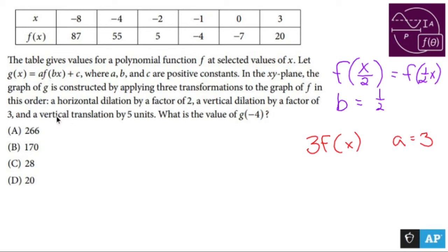Now the easiest part about all of this is the vertical translation of five units. That just means you're moving your graph up five. So in this case, plus c means c is five. So I have three things that I need to put together here. I have b is a half, a is three, and c is five.